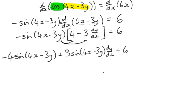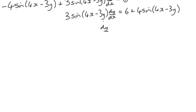Alright, keep the dy by dx term to the left, we only have one, so we've got 3 sin 4x minus 3y dy by dx equals 6, plus 4 sin 4x minus 3y, and then we can divide through by the multiplier on the left-hand side. So we've got dy by dx equals 6, plus 4 sin 4x minus 3y, all over,